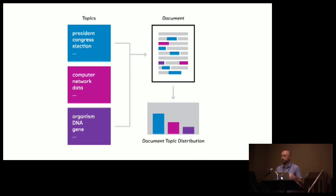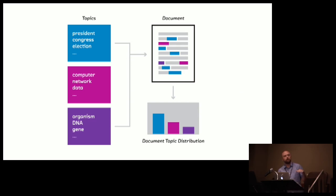This is David Blei, who works up the street at Columbia. In 2003, he published with co-authors a paper called Latent Dirichlet Allocation. I'm not going to get into the technical details, but I'm going to build up some intuition. This is topic modeling. In Luhn's approach, we looked for sentences that mention words occurring frequently in the document. Now we're going to look for sentences that mention topics important to the document. LDA is a generative model, which means we assume documents are generated by an essentially random process — obviously not how most documents are written, but it turns out to be an empirically very useful assumption.